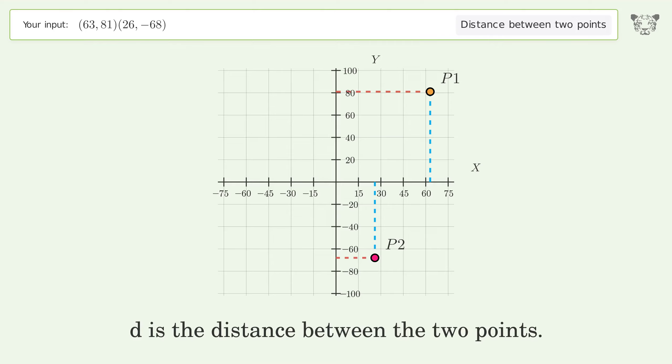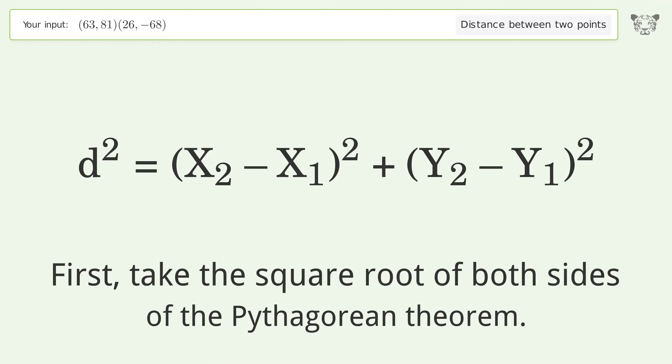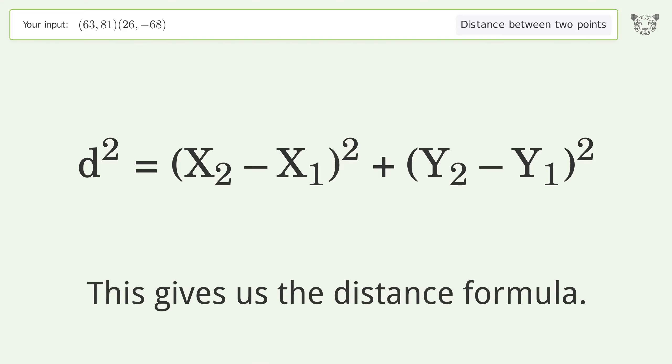d is the distance between the two points. First, take the square root of both sides of the Pythagorean theorem. This gives us the distance formula.